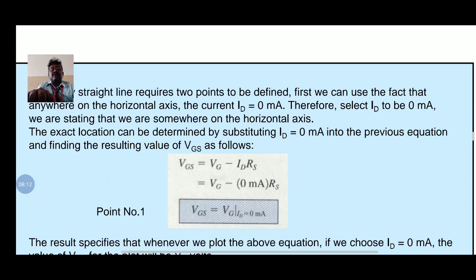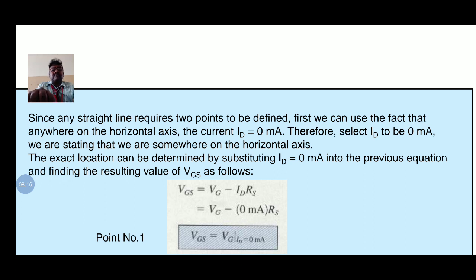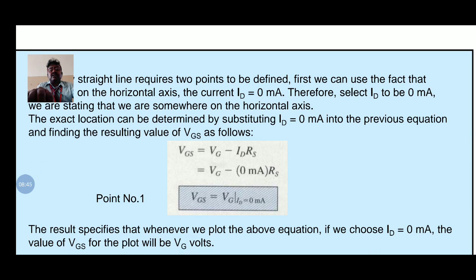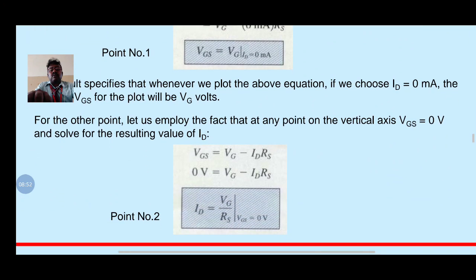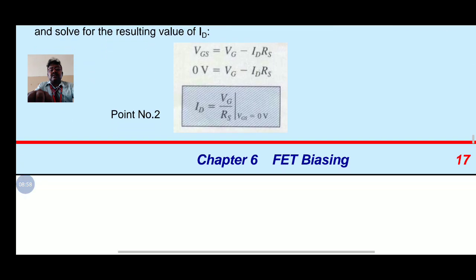Since any straight line requires two points to be defined: first, anywhere on the horizontal axis ID equals 0 milliamps. Substituting ID equal to 0 into the equation gives VGS equal to VG. This is point number 1. For point number 2, ID equal to VG divided by RS. Once these two points are established, the bias line can be drawn on the transfer characteristic.